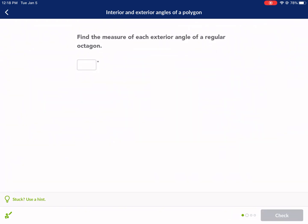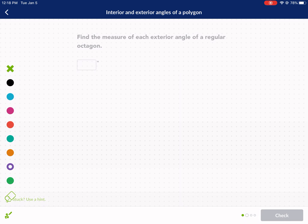Find the measure of each exterior angle of a regular octagon. Different formula now. So that was interior angle, now we're talking about exterior angles. So the sum of exterior angles of a polygon, this one's easy, this is equal to 360.